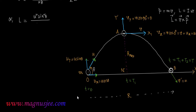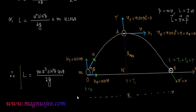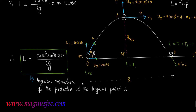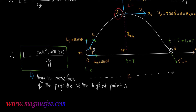In place of u_x we write u cosθ. Therefore L = m u³ sin²θ cosθ / 2g. This is the angular momentum of the projectile at the highest point A of the parabolic trajectory. Equivalently, L = h_max × mv = mu³ sin²θ cosθ / 2g.